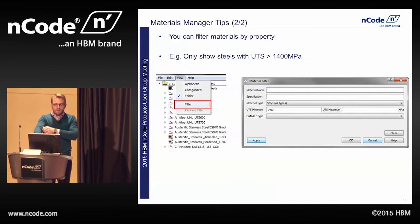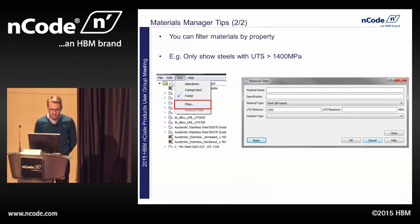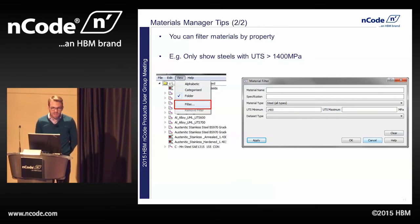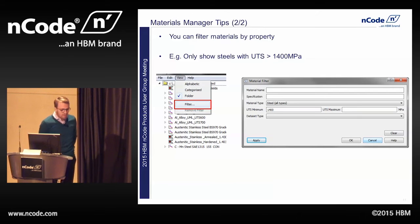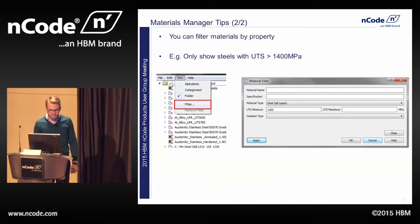Secondly, you can also filter that list. Under the view button, click on filter and it will bring up the material filter dialog box. You can enter a series of values or names to filter by. For example, filtering for steels with a minimum UTS of 1400 MPa — the list of all materials will then be limited strictly to those that meet that criteria.